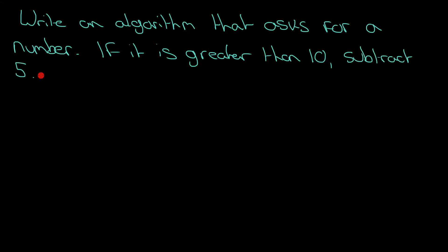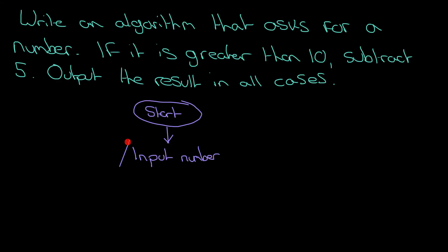Let's try this. Write an algorithm that asks for a number. If it's greater than 10, subtract 5. Output the result in all cases. We'd start off that algorithm just as you would do with the previous one, with your start and stop box. We'd have some input.